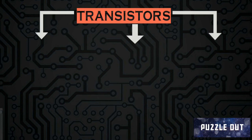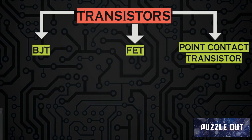Coming to the classification, transistors are classified into three broad categories: the BJT, the FET, and the point contact transistor. BJT stands for Bipolar Junction Transistor — it uses both electrons and holes as charge carriers. The FET, or Field Effect Transistor, uses an electric field to control the flow of current.